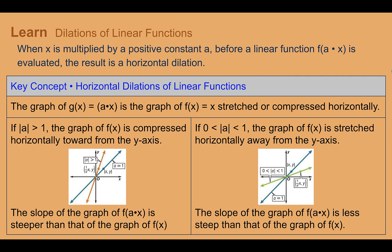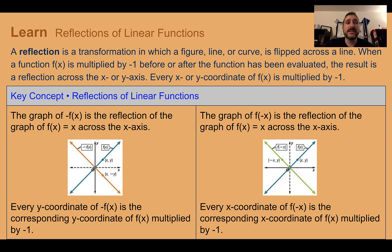Similarly, horizontal dilations occur when x is multiplied before it's plugged in — a is inside the parentheses. If a is greater than one, the graph is compressed toward the y-axis, making the line steeper, just like a vertical stretch. If the value is between zero and one, it gets stretched away from the y-axis toward the x-axis. The key is whether it's inside or outside the parentheses: inside is horizontal, outside is vertical.